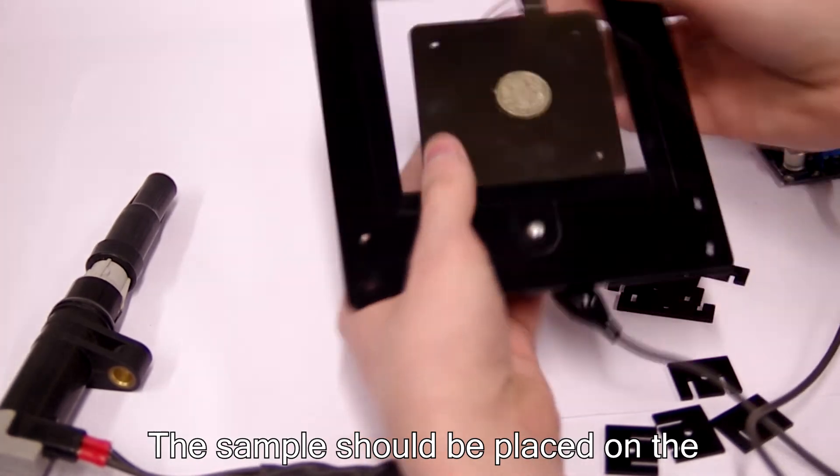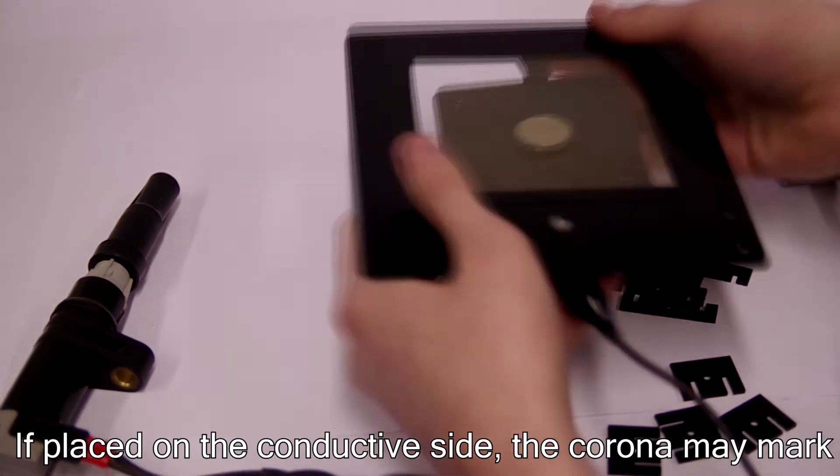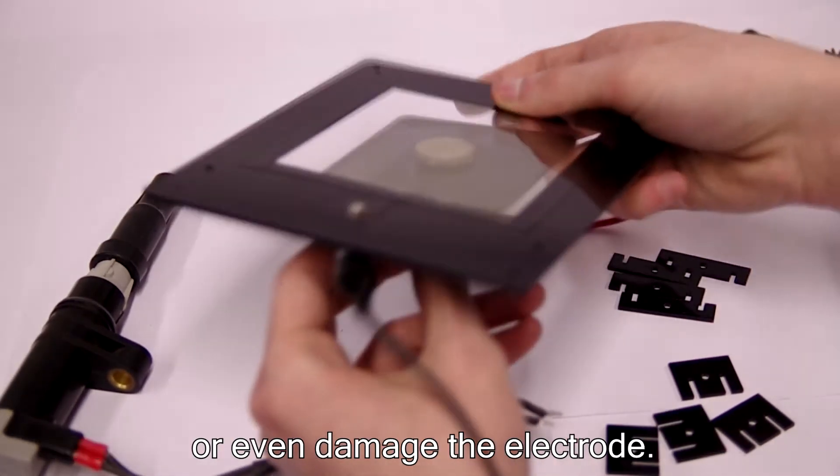The sample should be placed on a non-conductive side, as flat as possible. If placed on the conductive side, the corona may mark or even damage the electrode.